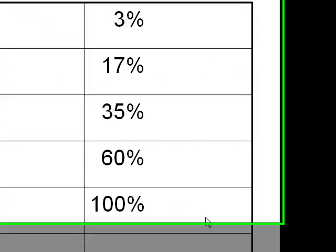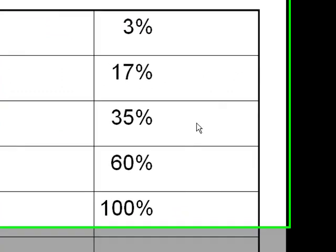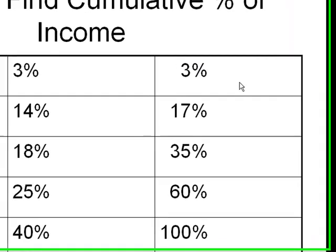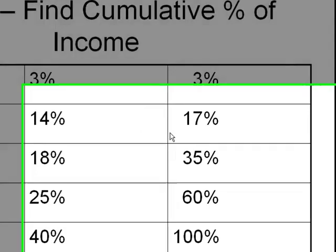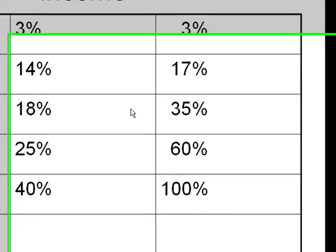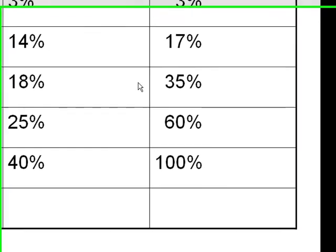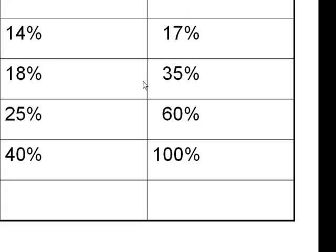The next step is to find the cumulative percent of income. I'm going to take the 3% from Bob and add it to the 14% from Kathy for a total cumulative percent of income of 17%. Likewise, I've added 17% plus 18% to get 35%, 35% plus 25% to get 60%, and 60% plus 40% to reach 100%. This should always add up to 100%.